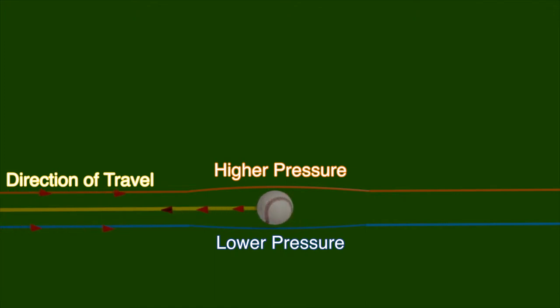Drag is caused by the resistance of the air, a fluid, as the ball moves through it. The spin of the ball changes how the ball interacts with the air.